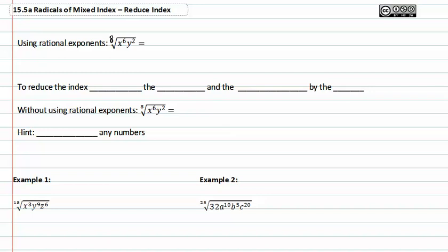We can change this by using the rules we know for indexes and exponents. We could rewrite the eighth root of x to the sixth y to the second simply by rewriting what's inside the radical.